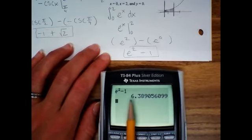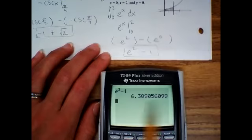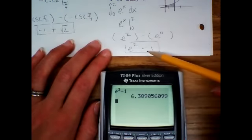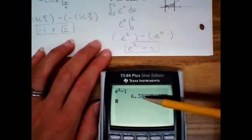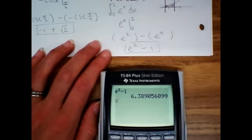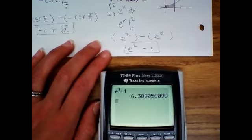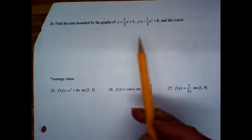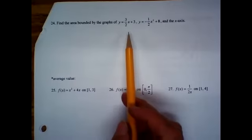Just for thoroughness: e squared minus 1 in the calculator gives 6.389 units squared for this area. I always like to show it in decimal form because e squared minus 1 doesn't mean that much to us, but knowing it's around six point something is a little more concrete.